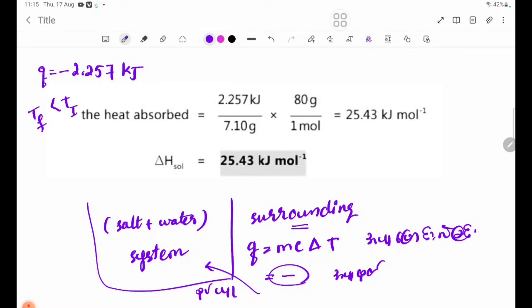So we can use delta H solution as positive 25.43 kilojoules per mole. We are going to talk about the system delta H and the surrounding system delta H.